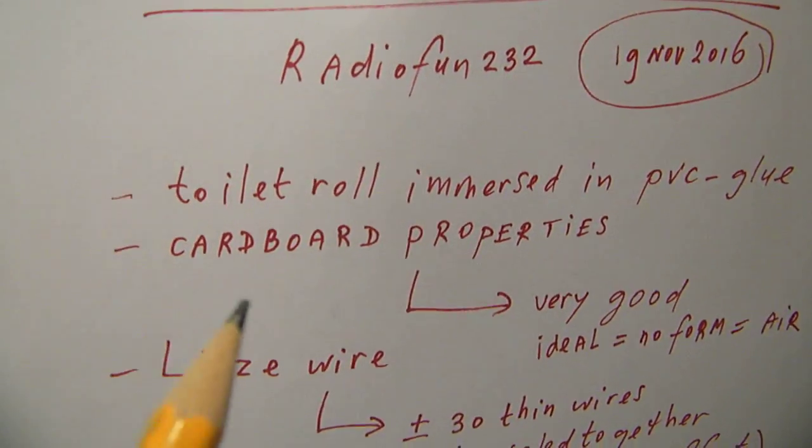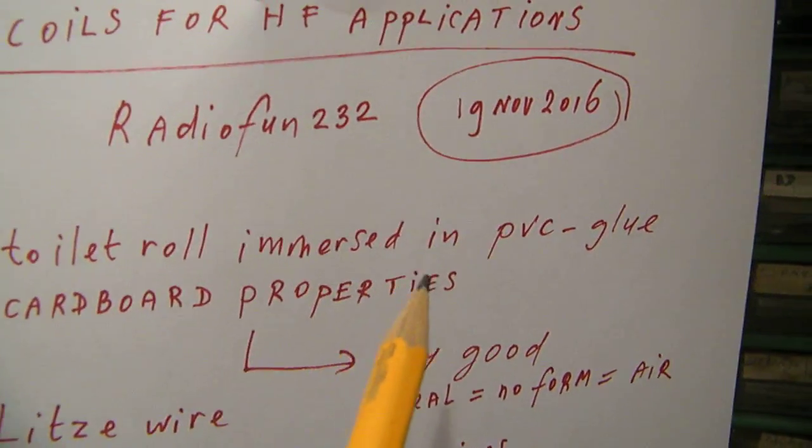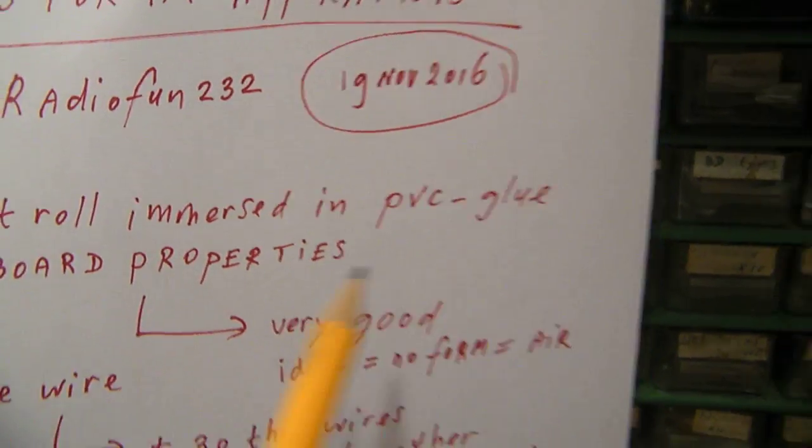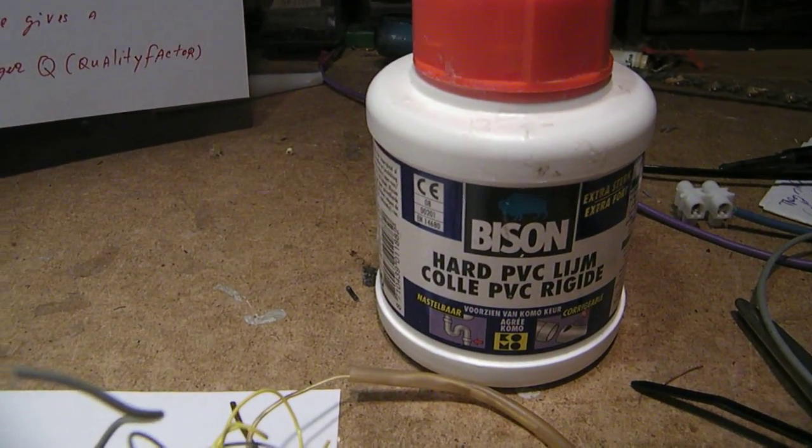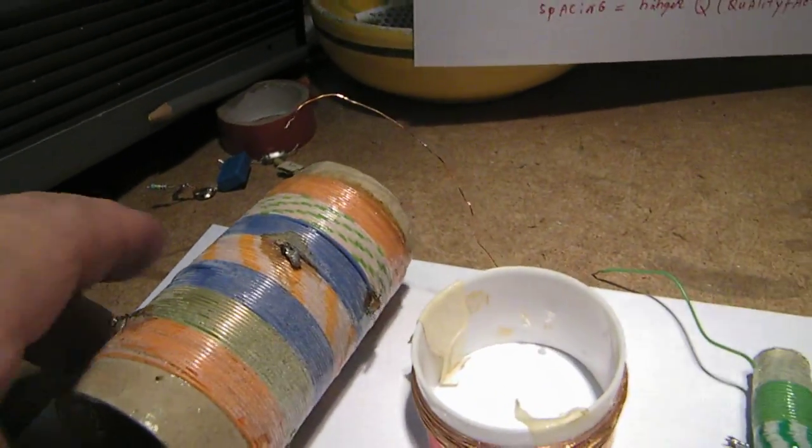I often use for shortwave coils a toilet roll that's immersed in PVC glue. And that's here. You see such a coil, it's a toilet roll.